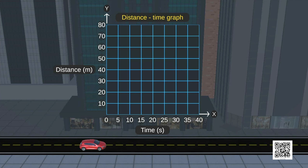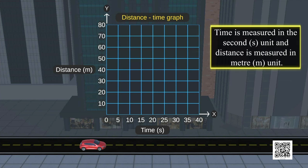Any convenient scale of choice may be adopted in these graphs. For example, on the distance-time graph of the car, we can see that time is measured in seconds, i.e., s unit, and distance is measured in meters,